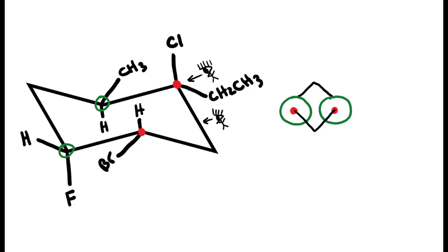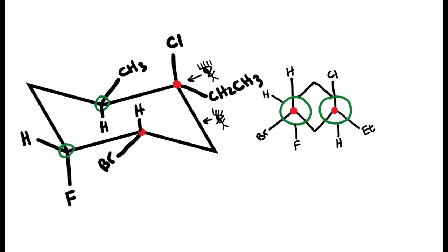Now we can go ahead and fill in the Newman projection. Starting with the first front carbon: we have a hydrogen going axial up, and a bromine going equatorial down, so it's going to be slanted down. On the other front carbon, we have a chlorine going axial up or straight up, and an ethyl going equatorial down, so slanted down. For the back carbons: the first has a fluorine going axial down or straight down, and a hydrogen going equatorial up, so slanted up. The other back carbon has a hydrogen going axial down and a methyl going equatorial up, so slanted up. And so now we've been able to draw the Newman projection for this molecule.